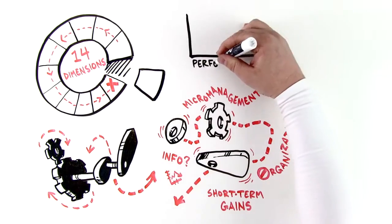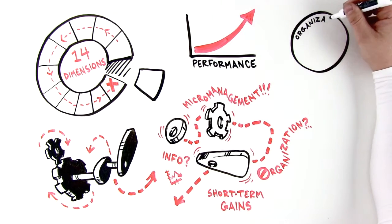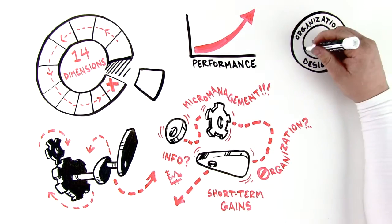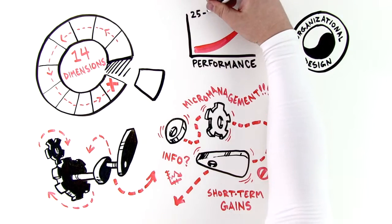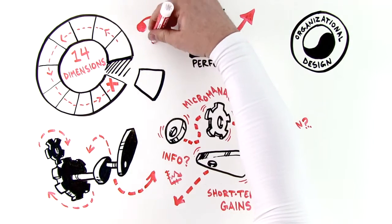Our research has shown that performance is optimized when the organizational design is fully aligned in every dimension and that perfectly balanced organizations have, on average, a performance that is 25 to 30 percent higher than those out of balance. But how do you know if your company is misaligned?